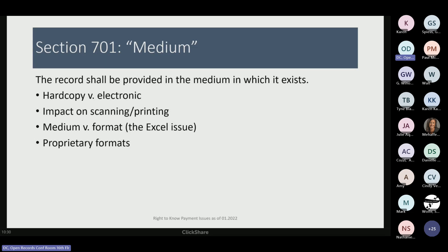Finally, there are proprietary formats — this usually involves police departments. A police department might buy off-the-shelf software where you can only access the data if you have the software itself, with no way to generate reports as an ASCII file, PDF, or other standard public format. If data is entirely in-house and can only be read with that customized software, you're not under obligation to provide those copies simply because you lack the technical resources to do so. I haven't seen this in a couple of years, but we did encounter it with proprietary formats used by police departments and in one case a school district.